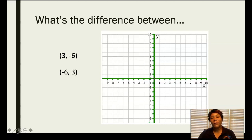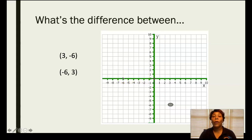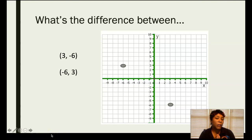Let's see — (3, -6). We think about the ordered pair, we know we start at our origin. So we're going to go 3 to the right: one, two, three — and we're going to go down 6: one, two, three, four, five, six. So we have a point right there. Then (-6, 3): go left six — one, two, three, four, five, six — and then up three: one, two, three. Remember, x then y — plot your x value then your y value, always starting from your origin.